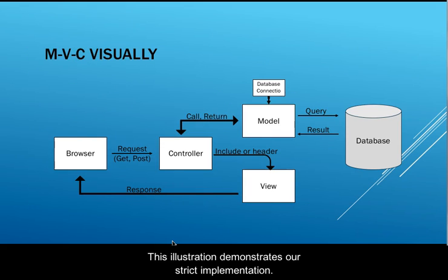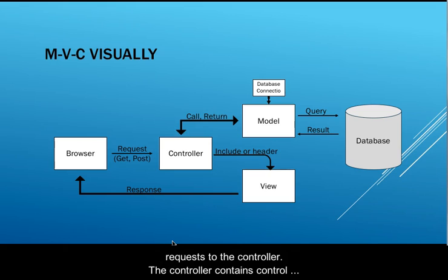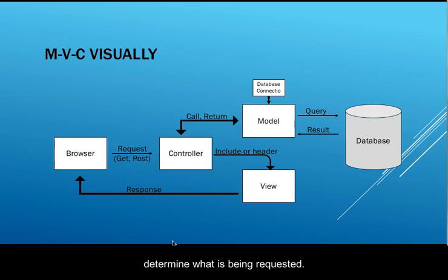This illustration demonstrates our strict implementation. You can see that browser links and/or forms only direct their requests to the controller. The controller contains control structures, such as if, else if, else, or switch statements, to determine what is being requested.